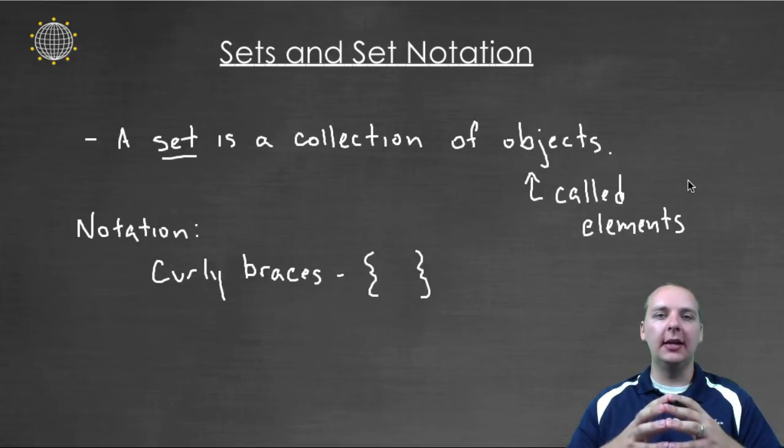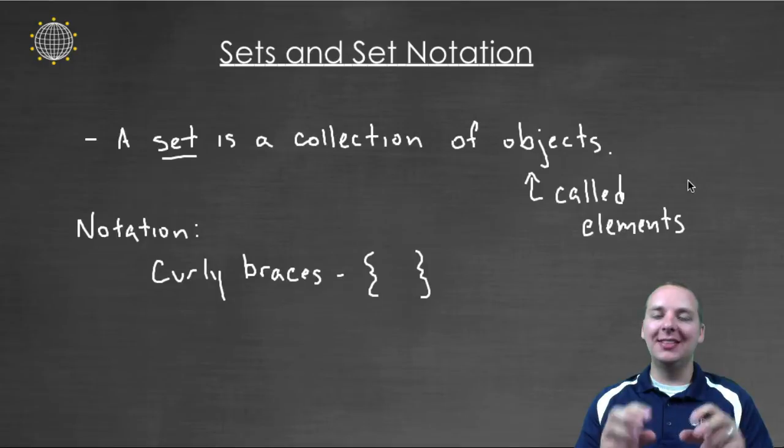So the objects inside of these sets are called elements. And the way that we write a set is we write these curly braces and then we put the elements of the set inside the curly braces. We just separate these elements by commas.